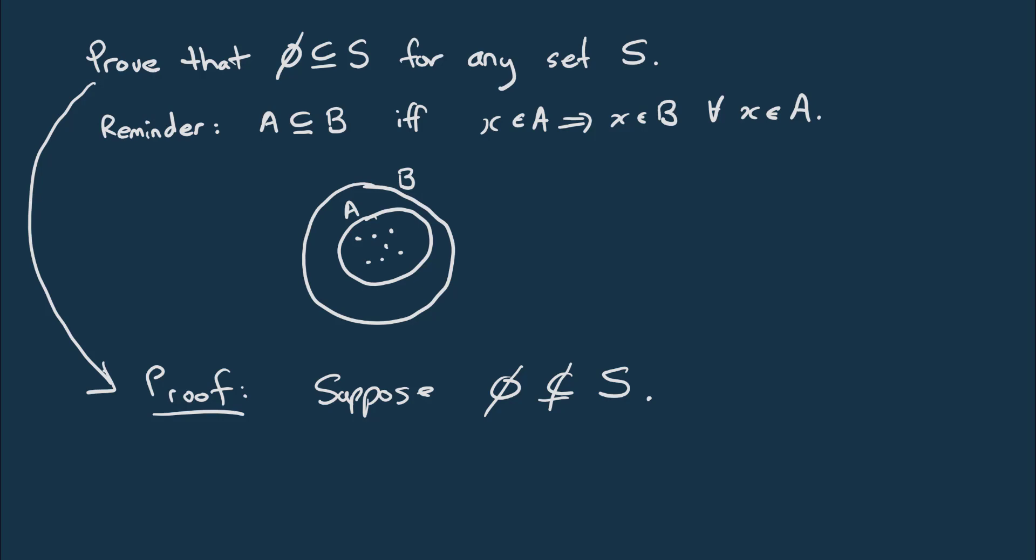Well, what does it mean to not be a subset of it? That means there must be some element in the empty set that is not in S. So then there exists, that's what this symbol means, there exists some X in the empty set such that X is not a member of S.